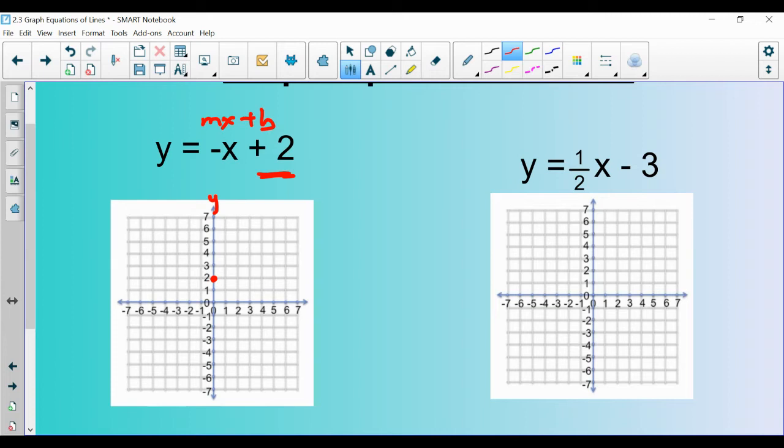So for y=-x+2, the b value is 2. That's where the graph crosses the y-axis. The graph is going to cross the y-axis at 2, and its slope is negative 1. We like to think of slope as a fraction, so negative 1 as a fraction would just be -1/1. Slope means rise over run. So you're going to rise negative 1, which is to say go down 1 and then run 1. We should be getting a line that is going down because our slope is negative.